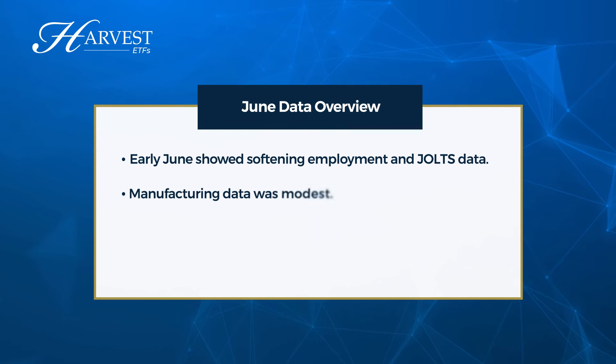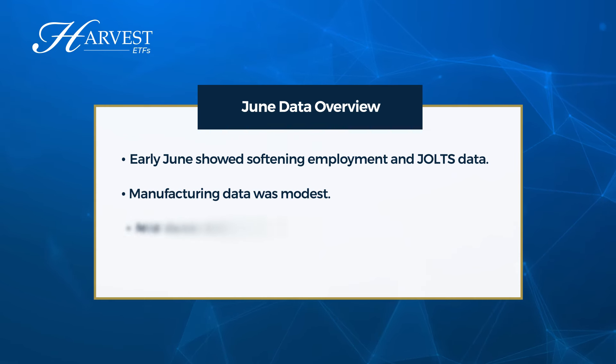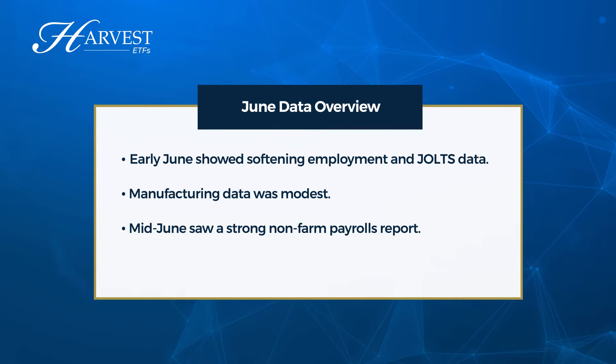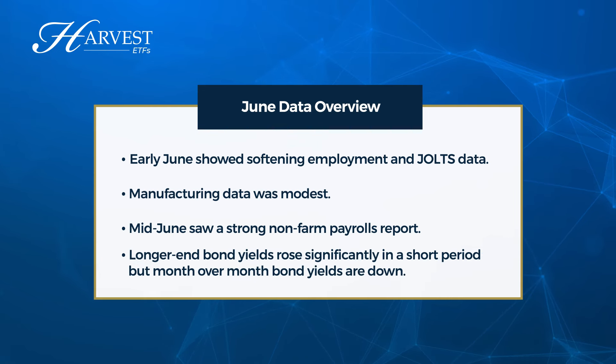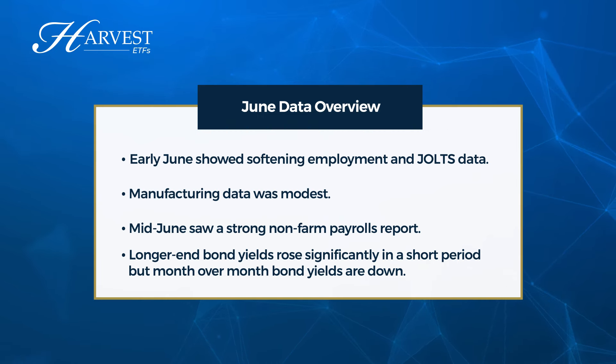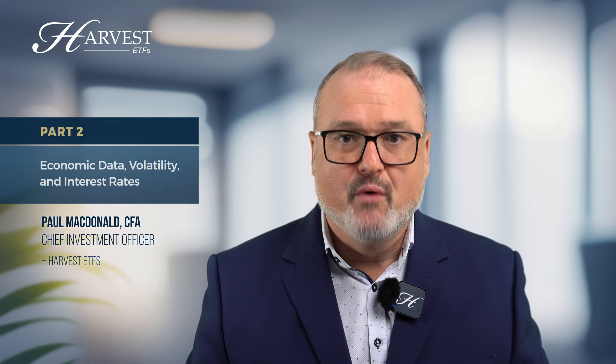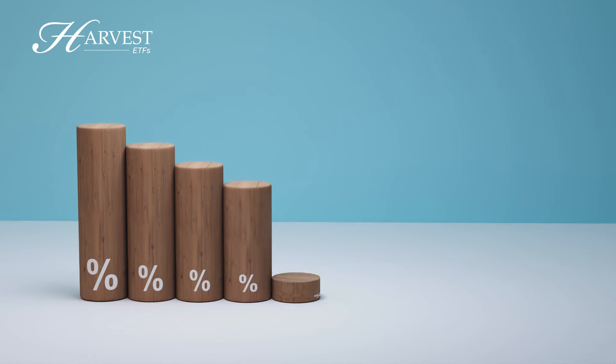Moving to economic data, volatility, and rates — the big picture takeaway is that we're in transition from the hiking to an easing cycle. The timeframe on when we'll shift to more of an easing is still to be determined, but we are in transition. During this period, the market in general is going to be very sensitive to economic data points in either direction, even data points that in normal environments we could frankly care less about.